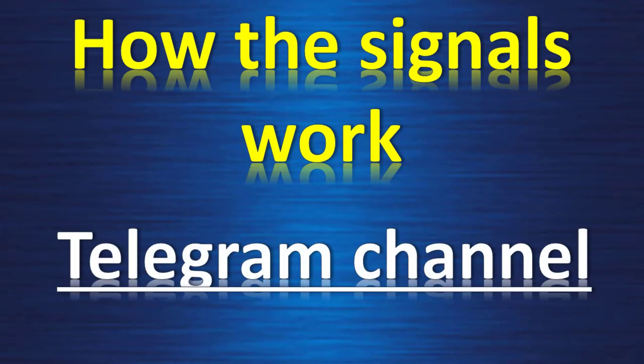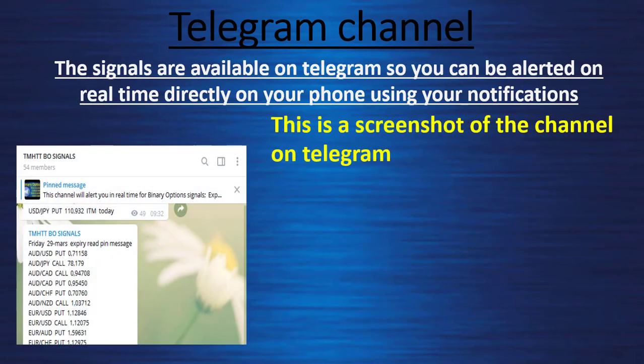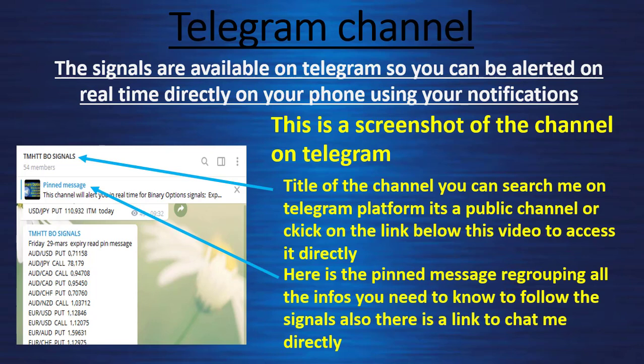Now let's look at the Telegram channel. The signals are available on Telegram so you can be alerted in real time directly on your phone using your notifications. This is a screenshot of the channel on Telegram — this is the title of the channel. You can search me on the Telegram platform; it's a public channel. Or you can click on the link below this video to access it directly. Here is the pinned message regrouping all the information you need to follow the signals, and there is also a link to chat me directly.